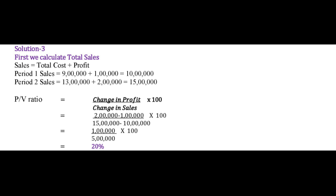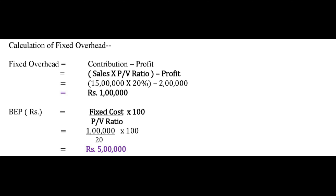Putting the values into the formula: PV Ratio = 1 lakh upon 5 lakh × 100 = 20%. This is how we first calculated sales and then calculated the PV Ratio in this question. Now after the PV Ratio, we calculate Break Even Point Sales. BEP Sales can be calculated in two ways — in value and in quantity. To calculate BEP Sales in value, the formula is: Fixed Cost upon PV Ratio. To calculate BEP in quantity, the formula is: Fixed Cost upon Contribution per Unit.